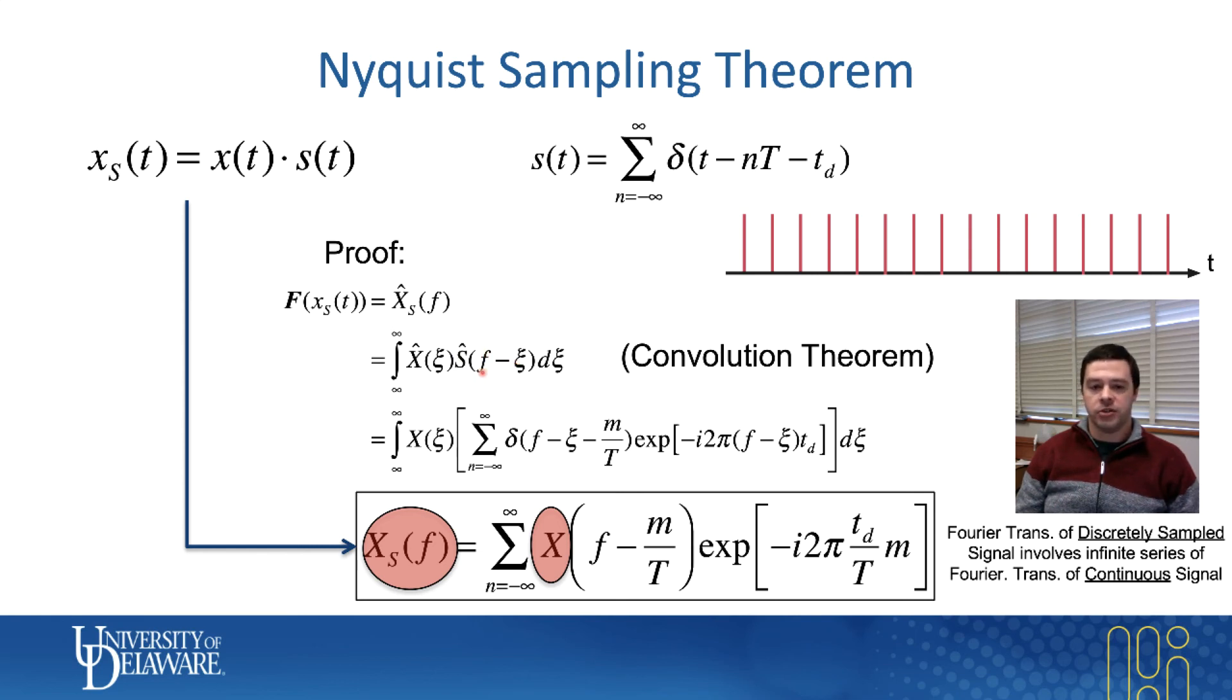If you actually go to a table of Fourier transforms to figure out what this time domain sampling thing looks like once you take its Fourier transform, you can calculate what it is, do some plugging in, and once you do that.